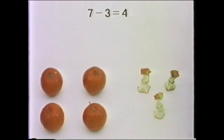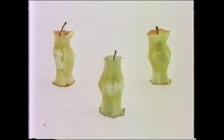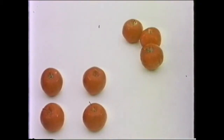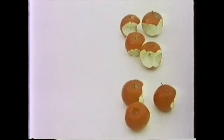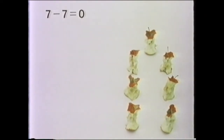You can see that there are other numbers of apples you can take away from seven. Let's go back to where we had seven apples all together. We know we have seven apples here. Let's not take any away. What would you say about that? Nothing would happen. But how would you write it? Seven take away zero equals seven. Now let's take away all seven. They're all being eaten! So we started with seven and we took away all seven. We're left with zero. And how would you write it? Seven minus seven equals zero.